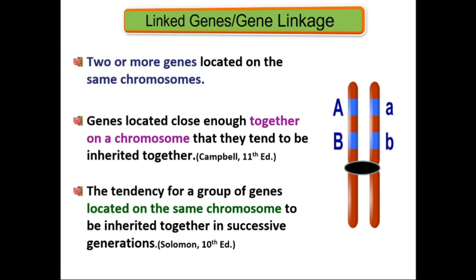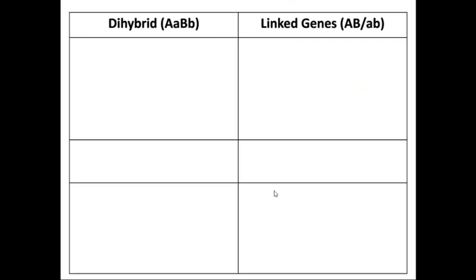Moving on to linked genes, or gene linkage: linked genes refer to two or more genes located on the same chromosome. These genes are located close enough together that they tend to be inherited together and do not obey Mendel's law because they do not undergo independent assortment. According to Solomon, gene linkage is the tendency for a group of genes on the same chromosome to be inherited together in successive generations.